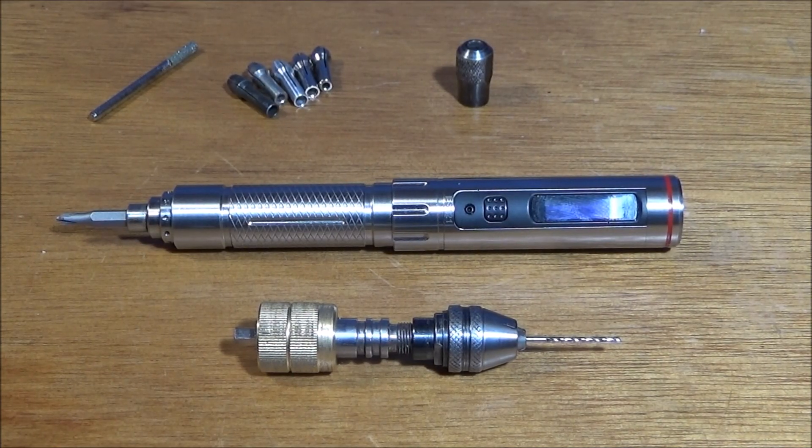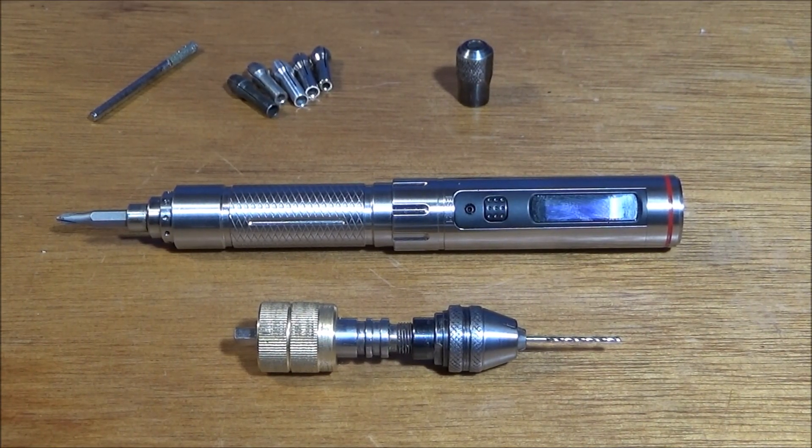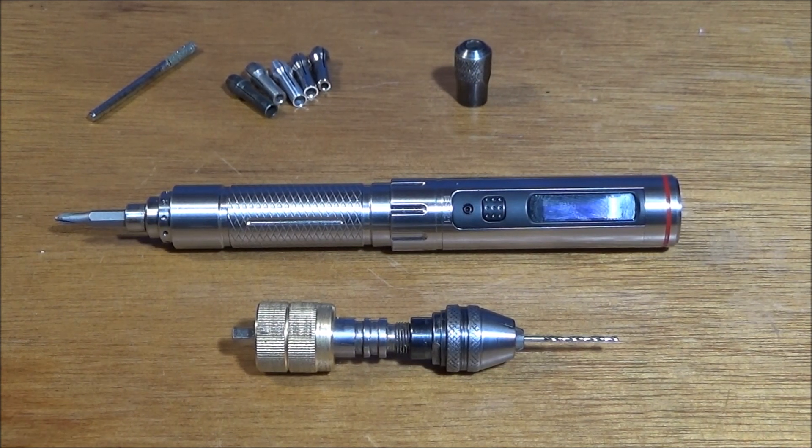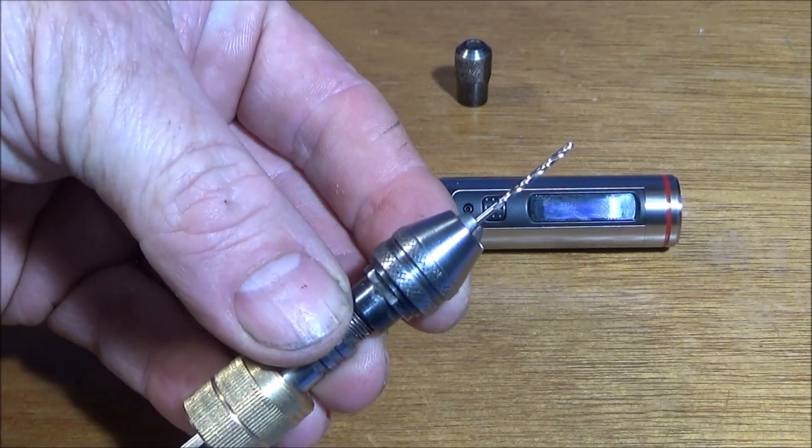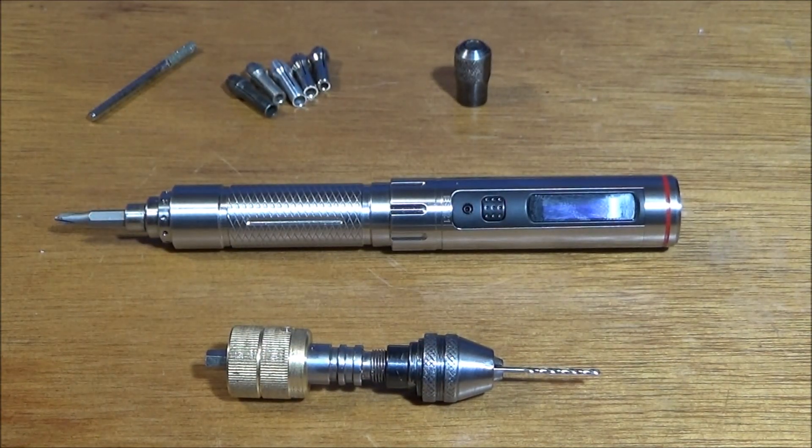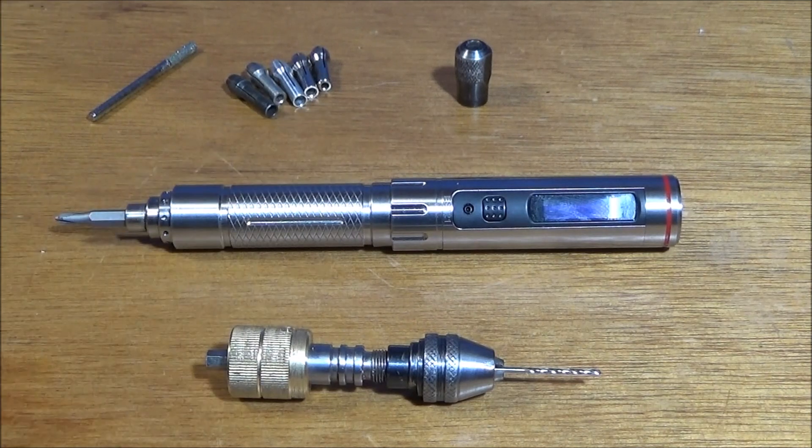When you buy a tool like this don't think that you're actually limited to the bits that are made for it - you can actually make your own bits. I've made this small pin chuck here which takes an ordinary small chuck but it can also take a small collet chuck.